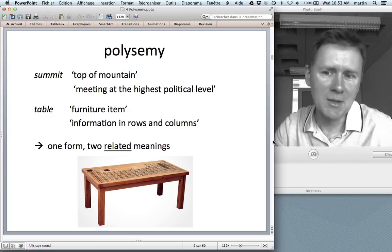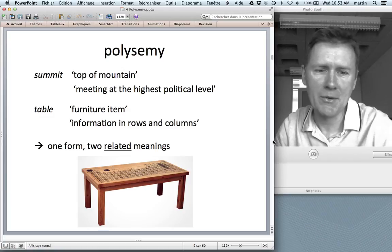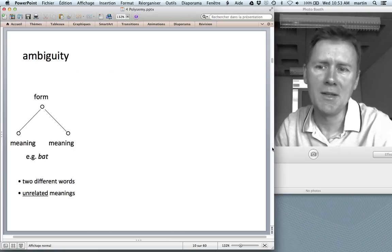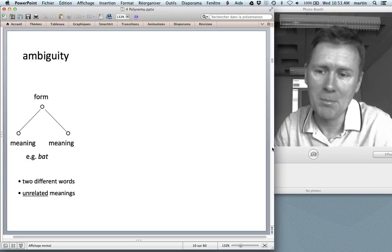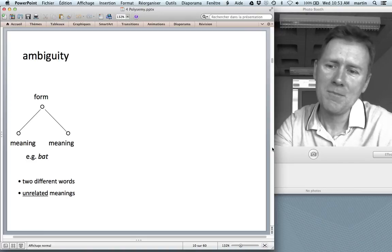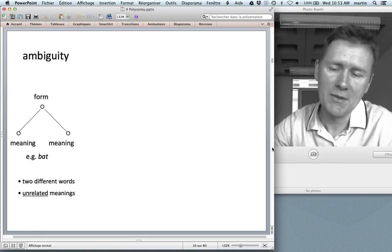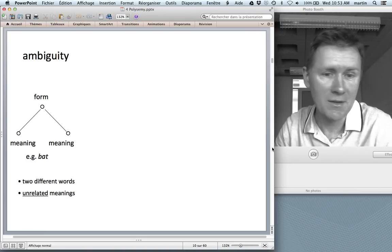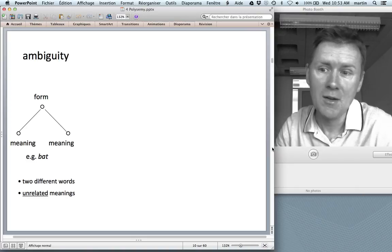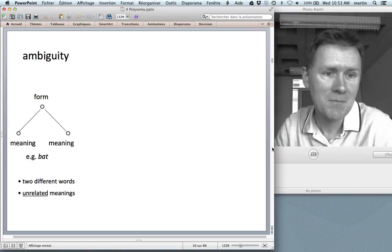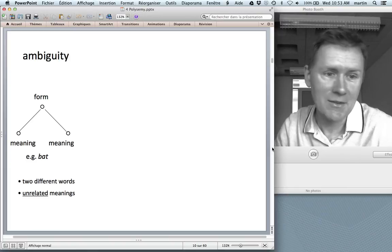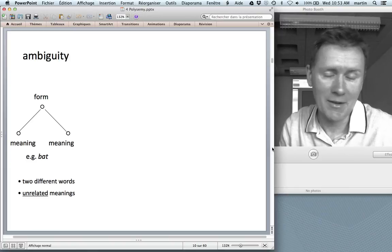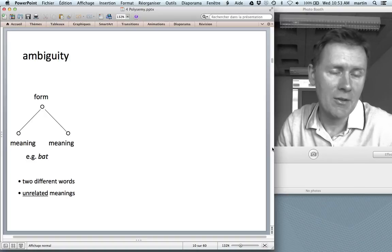Bottom line, in polysemy, one form maps onto two related meanings. To summarize this, ambiguity, illustrated by things like bat, maps single form onto several unrelated meanings, and so it actually makes sense to speak of bat and bat as two different words. In fact, if you open a dictionary, chances are that you will find two bats in there. Two separate entries. Bat one, the animal, and bat two, the sporting instrument.